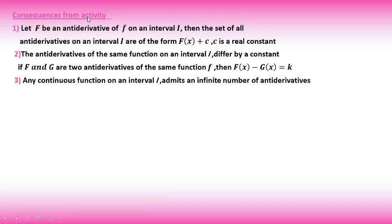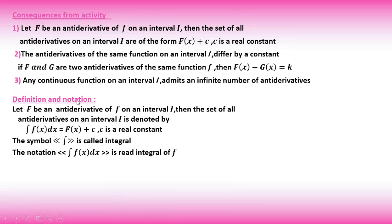Consequences from the activity — definition and notation: If capital F is an antiderivative of small f, then all antiderivatives have the form F(x) + c. If we have two antiderivatives, their difference is always a constant k. The integral symbol is introduced: ∫f(x) dx = F(x) + c. This notation will always be used. The symbol ∫ is called the integral.